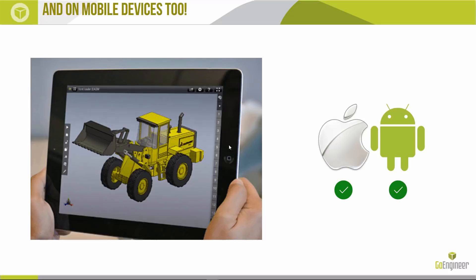An added bonus for mobile is augmented reality — you can use your phone to have your part show up in your surrounding environment. There's also a VR option so you can view your model through VR goggles. This means wherever you go you have your 3D files available. If you're at a business meeting and someone's interested in your product, you can easily show them your 3D files and rotate them on your Android phone or tablet.